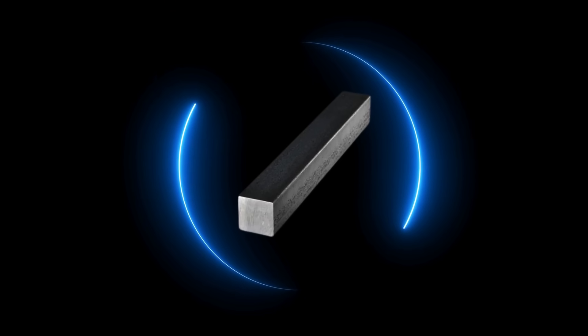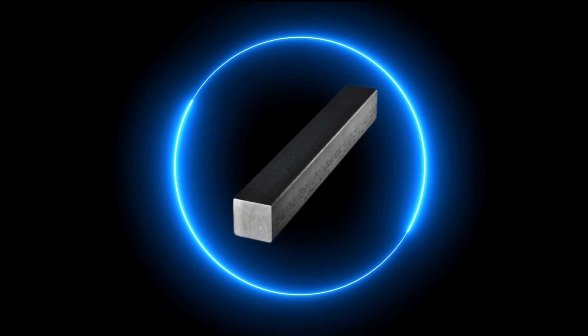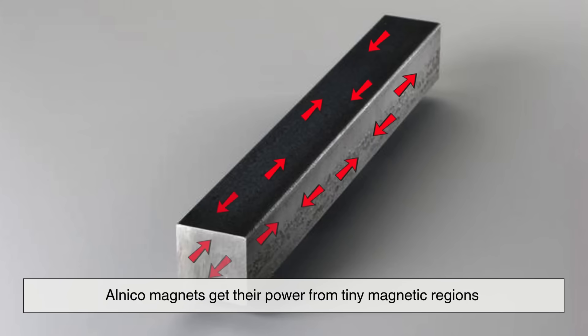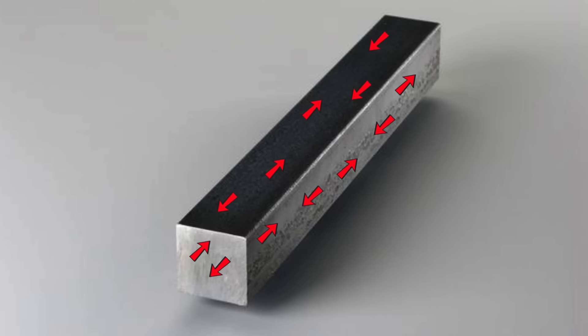Now, Alnico magnets work based on the same basic principle. Just like the Earth's magnetic field, Alnico magnets get their power from tiny magnetic regions inside the metal called magnetic domains. These domains behave like little magnets themselves.